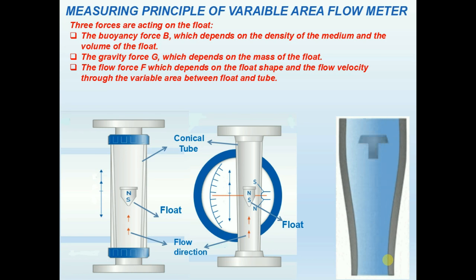The flow force F, which depends on the float shape and the flow velocity through the variable area between float and tube. So the gravity force G equals buoyancy force B plus flow force F.